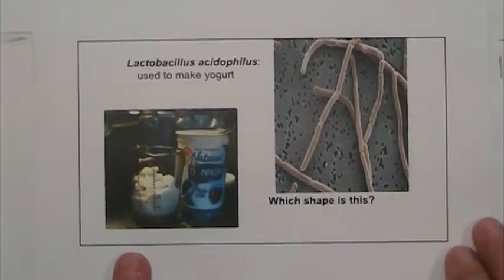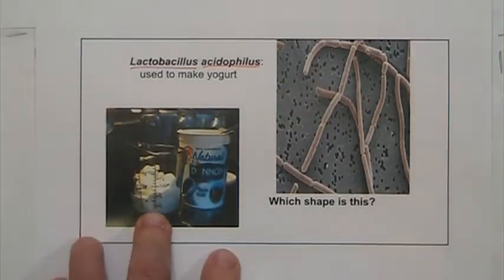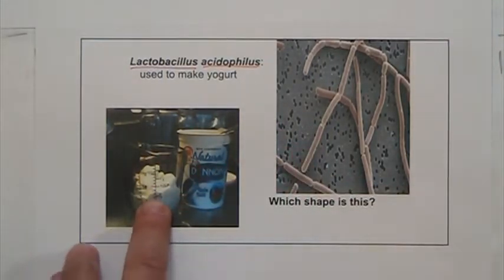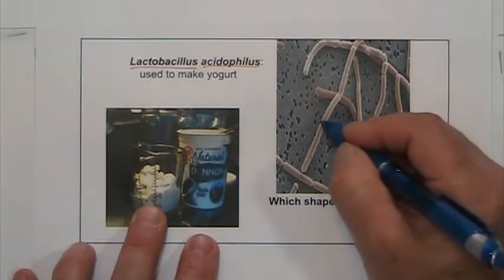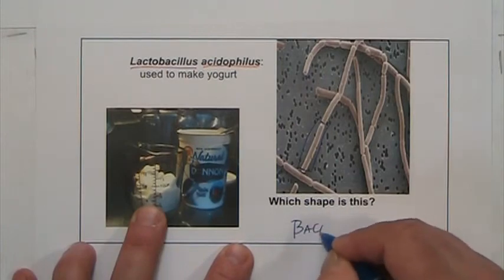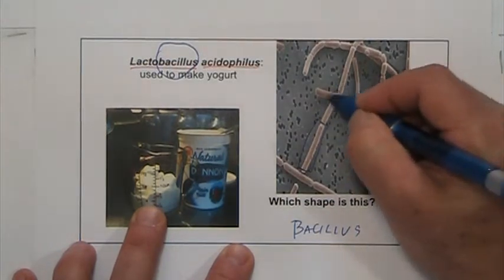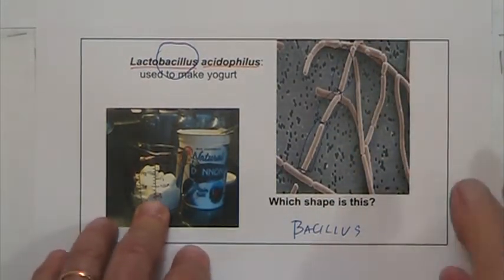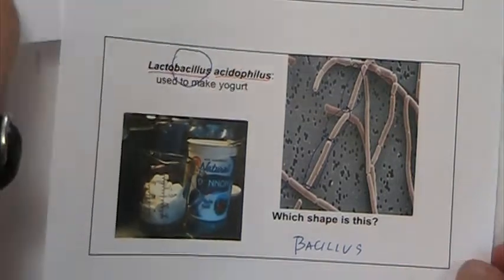Here is Lactobacillus acidophilus — the bacteria that is in yogurt. When you eat yogurt, you are actually eating this bacteria. As you can see, they are rod-shaped, so they are bacillus shape — just like the name tells you. They like to join head to head, so you have several Lactobacillus acidophilus together.